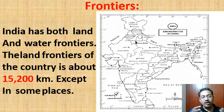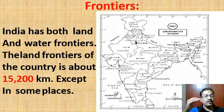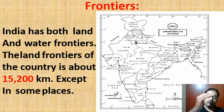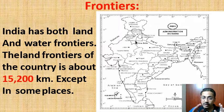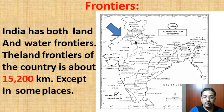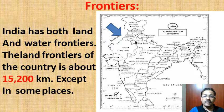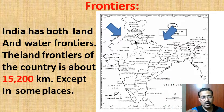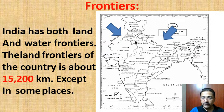Now let us see the frontiers. India has both land frontiers and water frontiers. The total length of India's land border is 15,200 kilometers. It starts from Gujarat, continues through Rajasthan and Jammu and Kashmir, and ends at West Bengal. So India has 15,200 kilometers of land border.